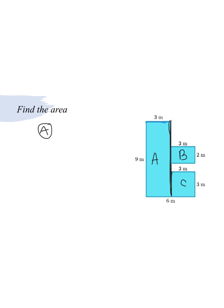So for A, we're going to do, we're going to multiply 3 times 9. So area equals 3 times 9. So the area of A would be 27.